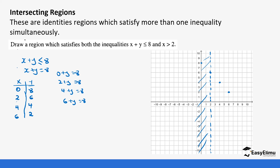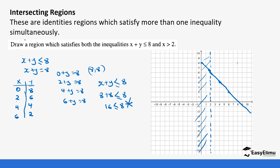When you draw the line, remember because of the equal sign the line is bold — join the points with a ruler using a bold, not dotted, line. To find which region is unwanted, we test a point above the line, say (8, 8): 8 plus 8 equals 16, and 16 is less than or equal to 8 is not true. So values above the line are unwanted. Our two lines are now intersecting at a certain point — that's how we show intersecting regions.